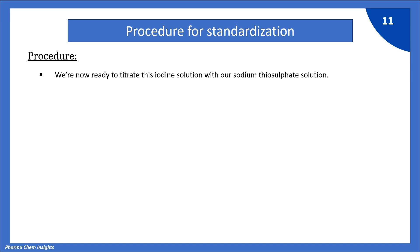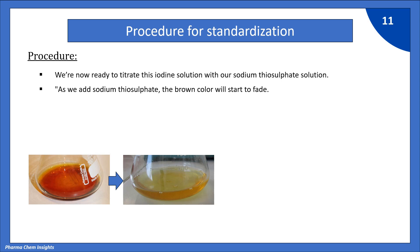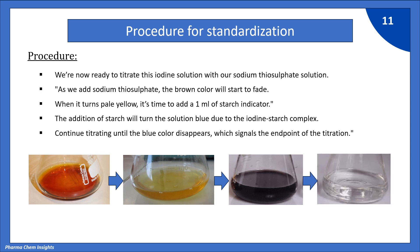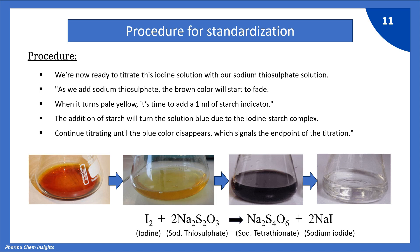Iodine is liberated and the solution turns dark brown. We are now ready to titrate this iodine solution with our 0.1 normal sodium thiosulfate solution. As we add sodium thiosulfate from the burette, the brown color will start to fade. When it turns pale yellow, add 1 ml of starch indicator — the solution will turn blue due to the iodine-starch complex. Continue titrating until the blue color disappears, which signals the endpoint. Iodine reacts with sodium thiosulfate to give sodium tetrathionate and sodium iodide.